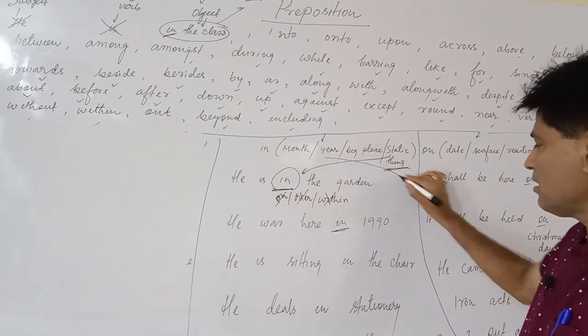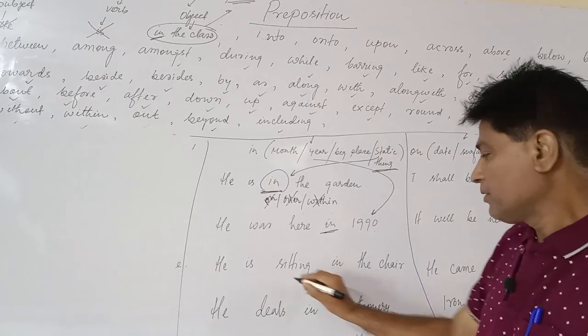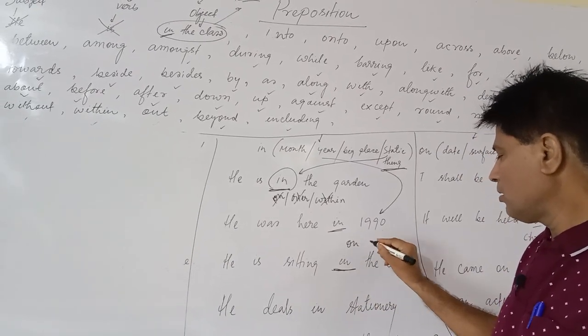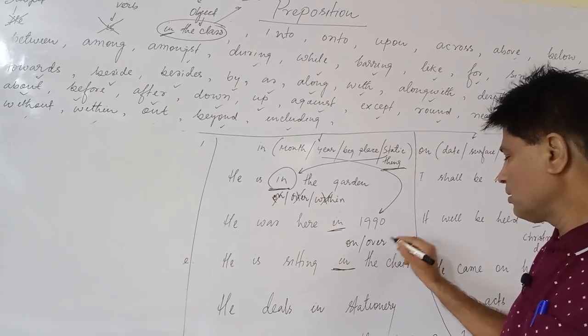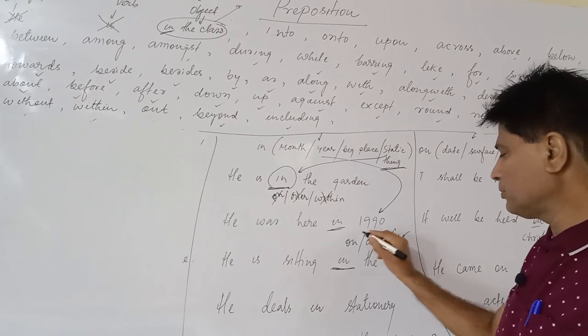In the case of year, you have to use in preposition. He is sitting in the chair, not on the or not over or not at the chair. This will be wrong prepositions when you are talking about sitting in a static sense.